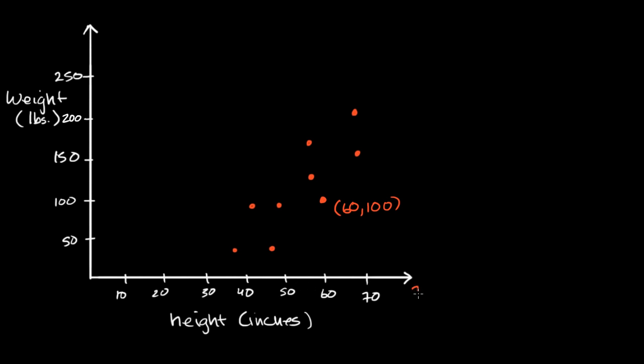One way to think about it, height is being measured on our x-axis, or plotted along our x-axis, and then weight along our y-axis. And this point from this person is the point 60, 100, representing 60 inches, 100 pounds. And so far I've done it for one, two, three, four, five, six, seven, eight, nine people.